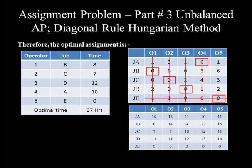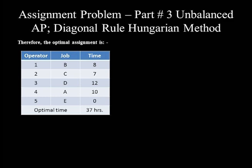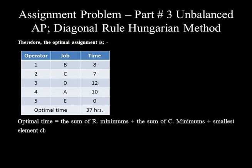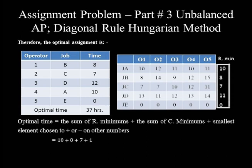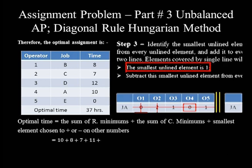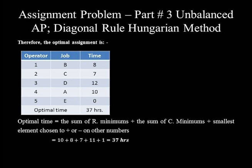Operator 5 is assigned to a dummy job, meaning it is not assigned to any of the 4 real jobs, because this operator needs relatively more time to complete each job than the other 4 operators. Finally, let's verify the optimal 37 hours using the formula: optimal time = sum of row minimums + sum of column minimums + smallest element from step 3 = (10 + 8 + 7 + 11) + 0 + 1 = 37. Thus the optimal time is confirmed correct, and the assignment is truly optimal. By this, I wrap up this part. Goodbye.